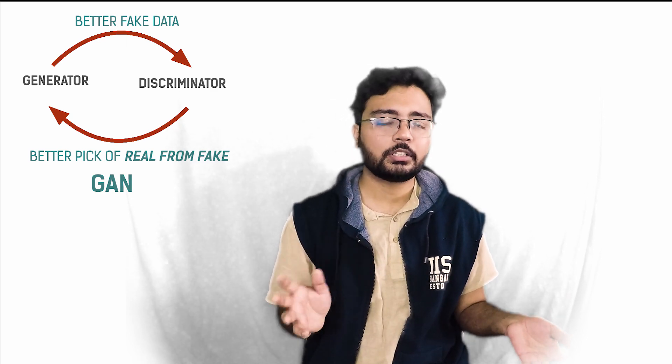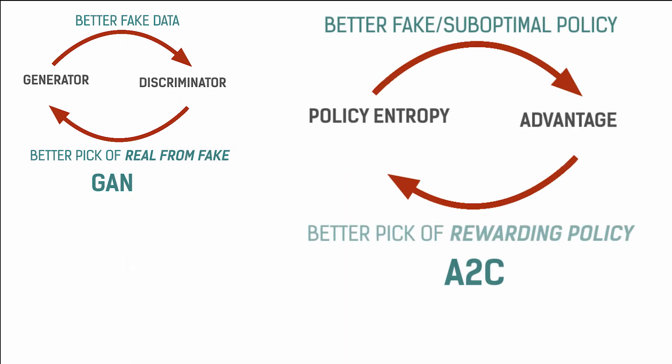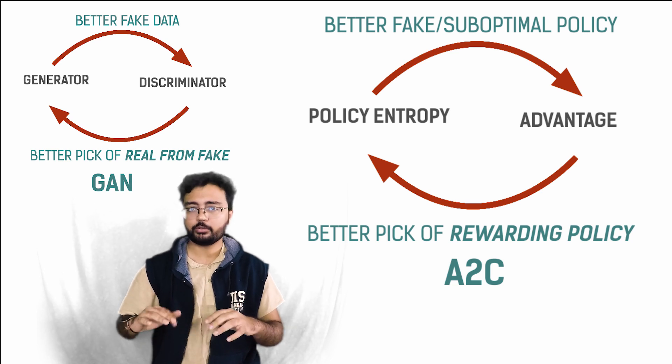Especially when you come to Actor-Critic, you will find its training very similar to something like Generative Adversarial Networks. Why? Because it also has an adversary, but here it is between advantage and policy entropy. And if you have trained GANs, you know how painful it can be. And if you don't know all these terms, don't worry, we will get to them.